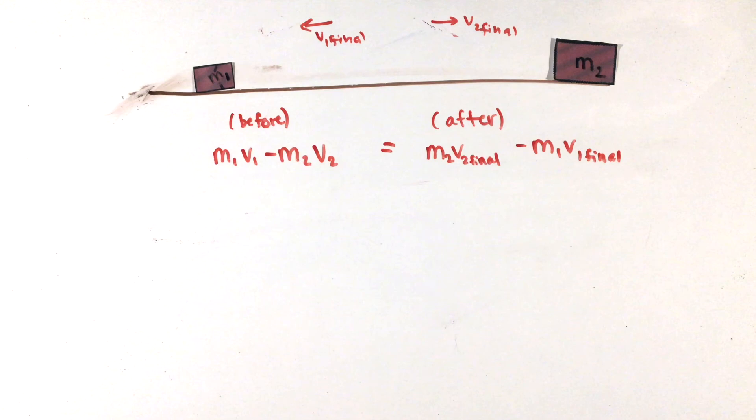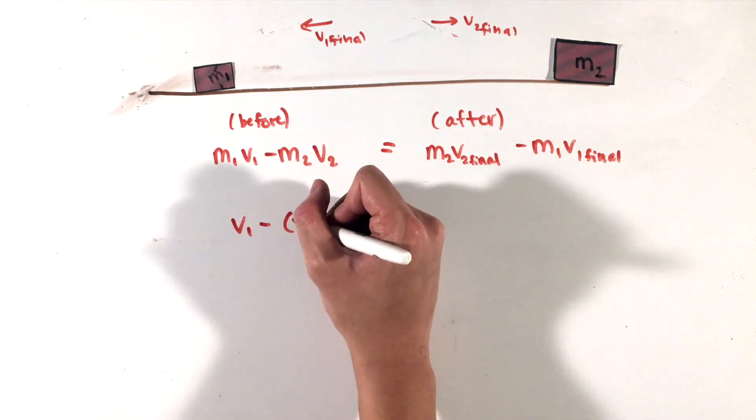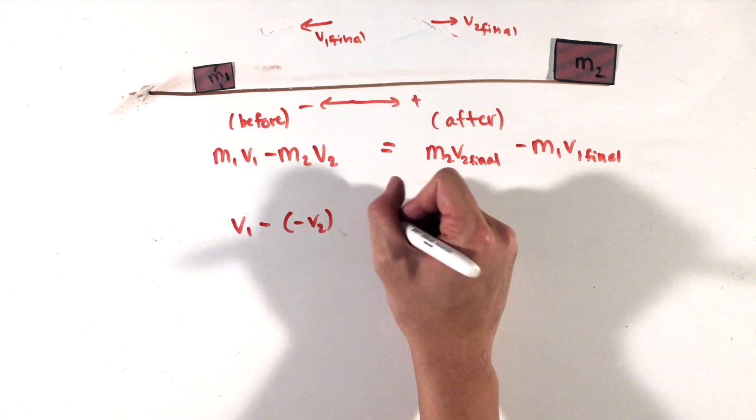which actually can be derived from the original two equations shown. To write this relative velocity equation correctly, find the relative velocity of the initial state and equate it to the opposite or negative of the relative velocity of the final state. For example, let's call the relative velocity to be the velocity of m1 minus the velocity of m2,